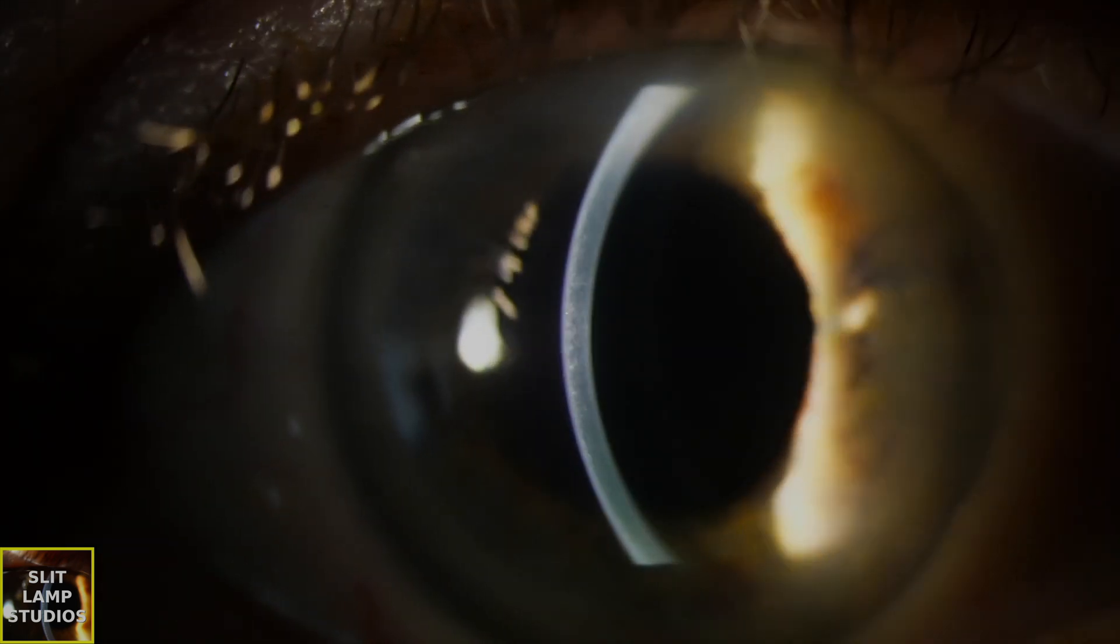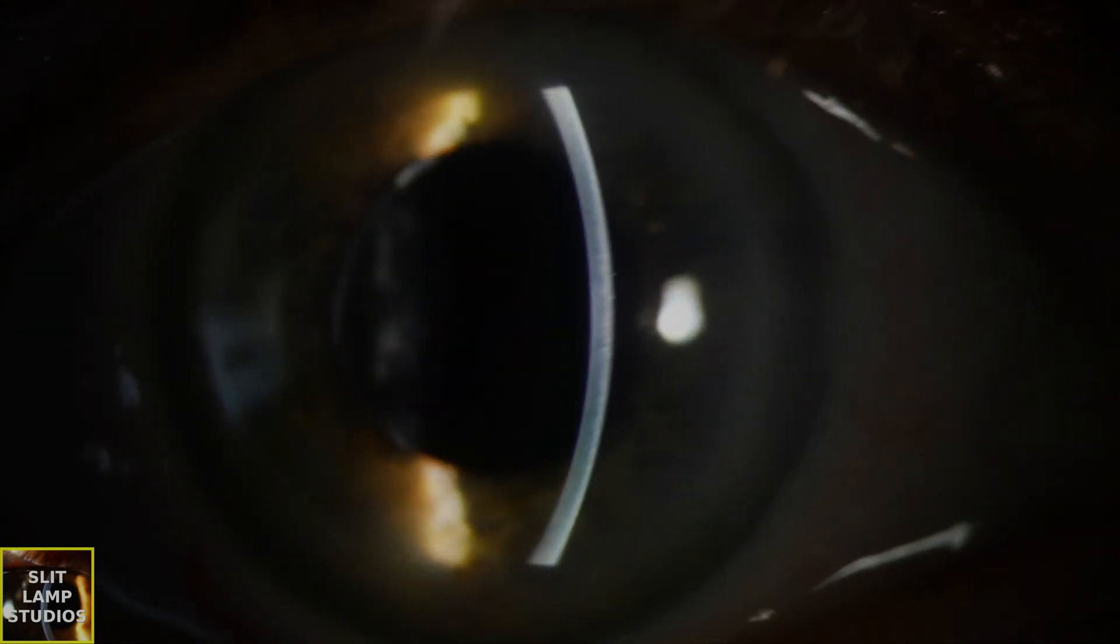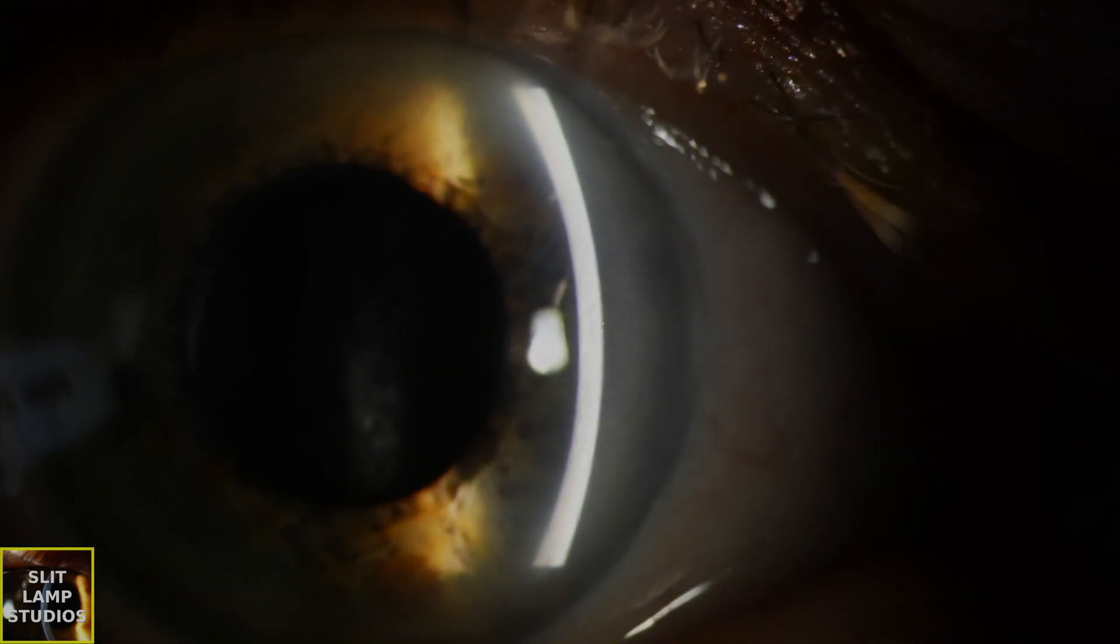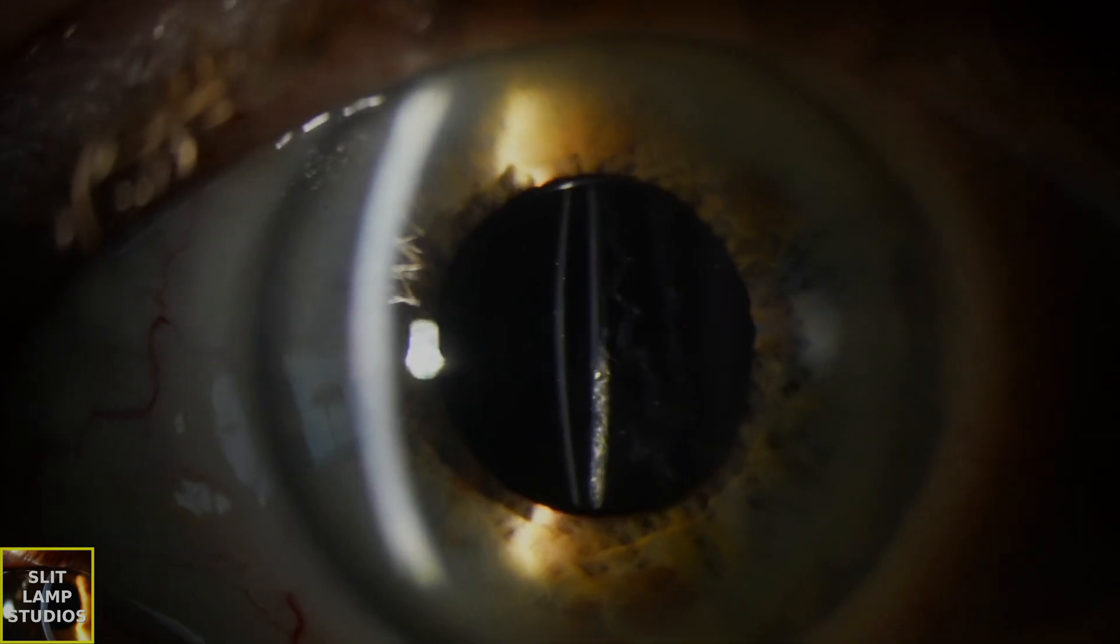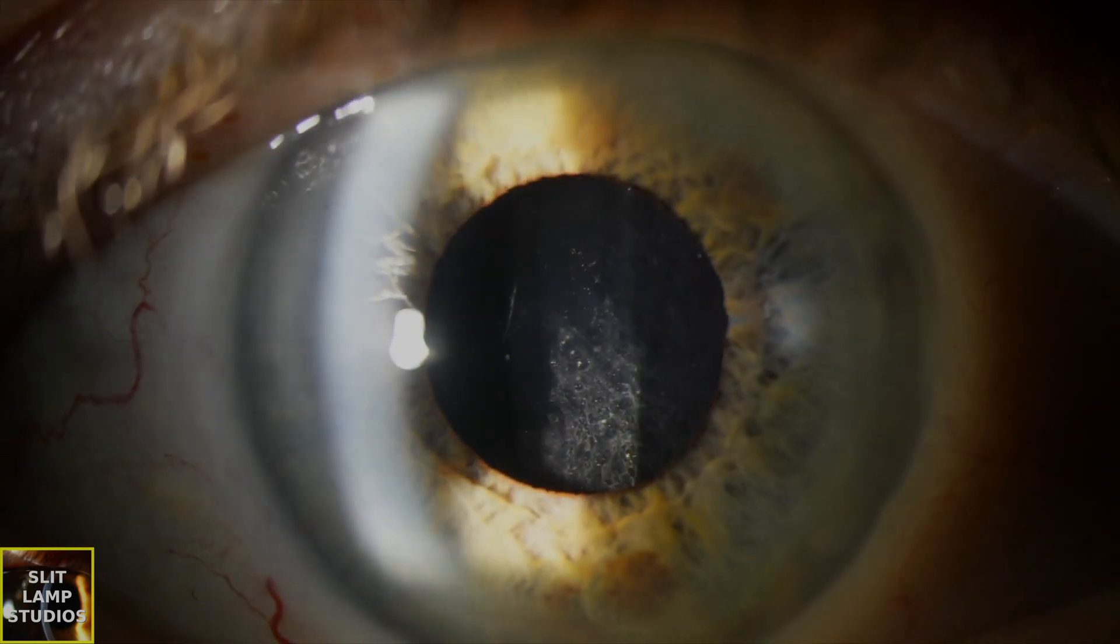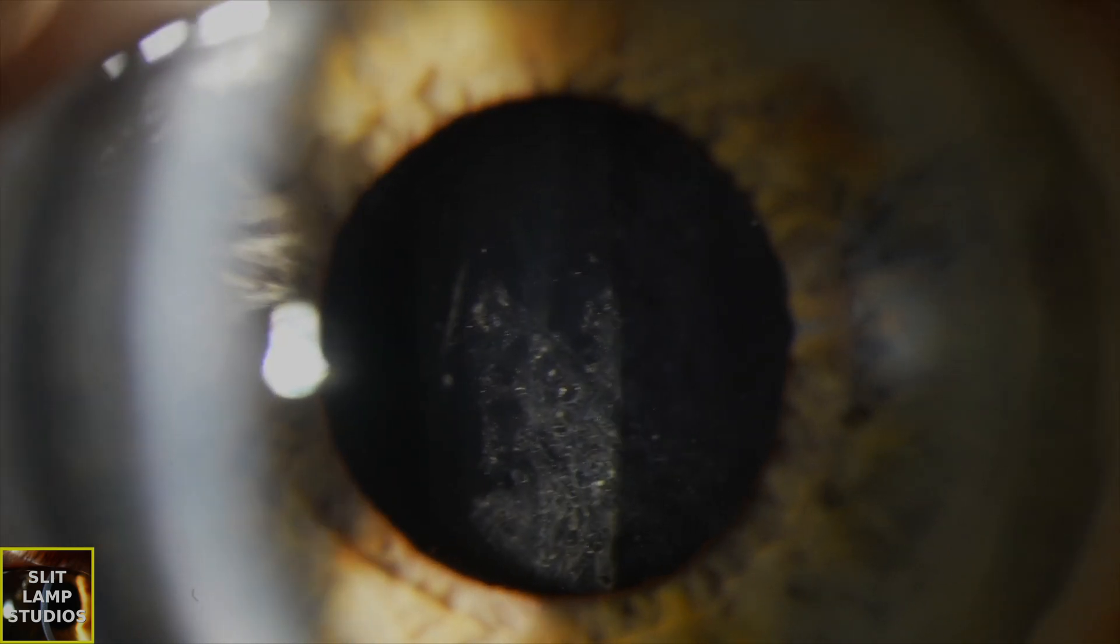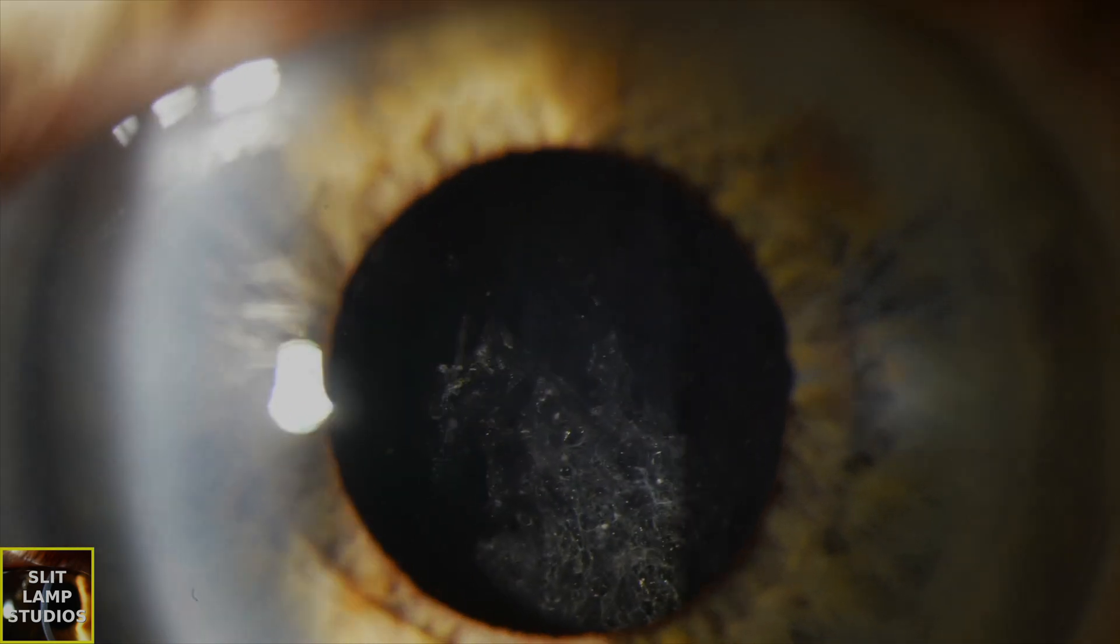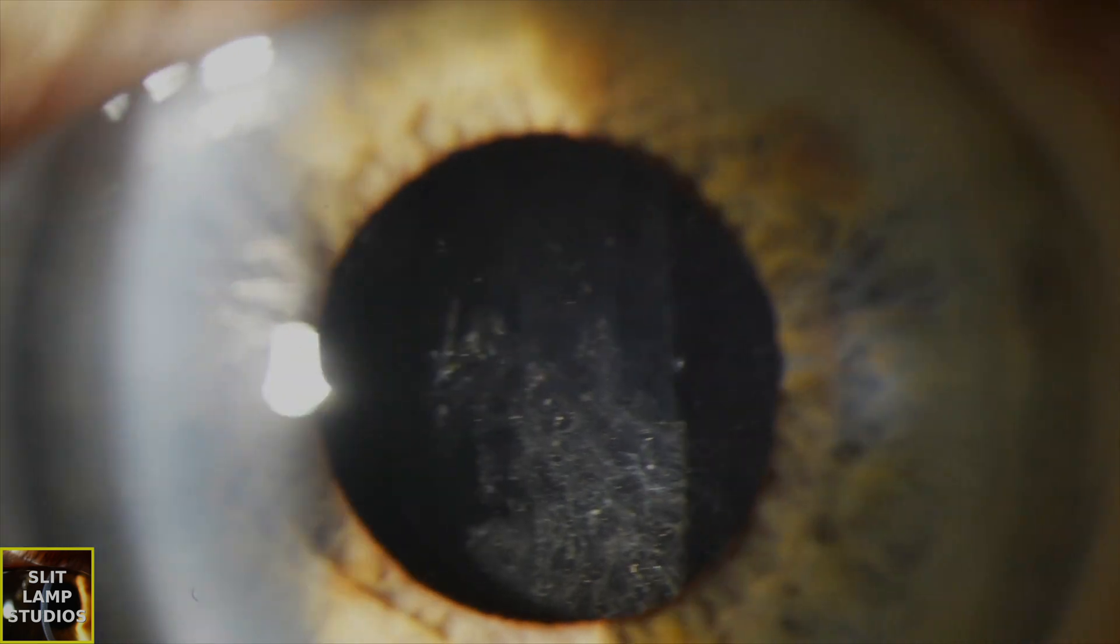Let's have a look at the first eye. So the cornea looks nice and clear. The patient's obviously pseudophagic. You can see there's actually some posterior capsular opacification there, some PCO. And that's when we look with direct illumination.